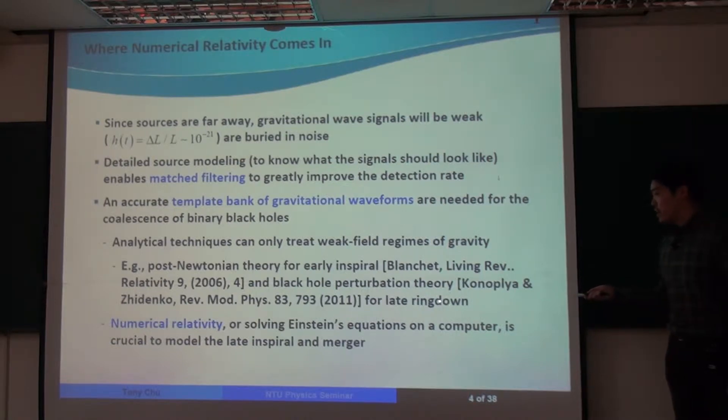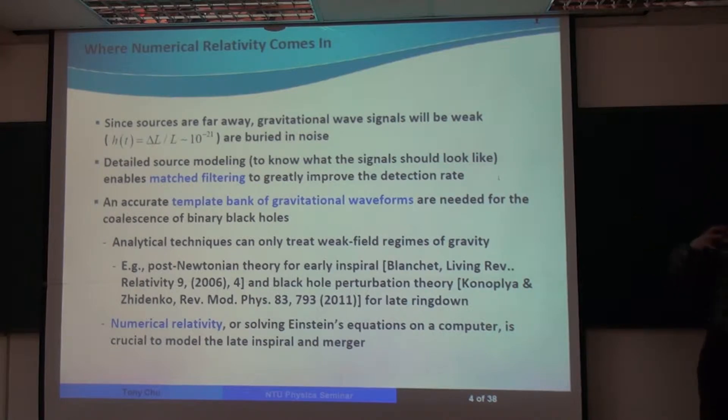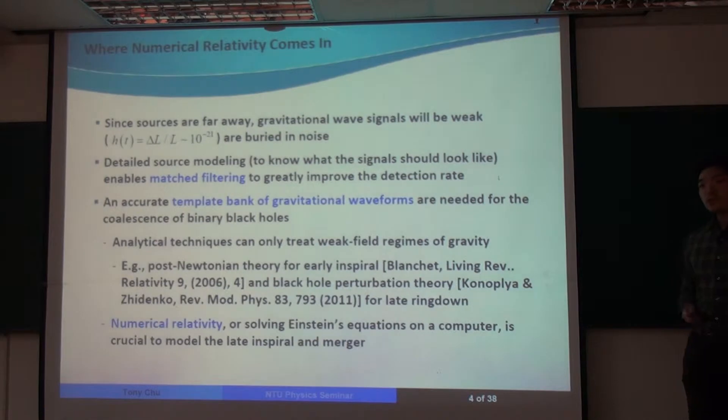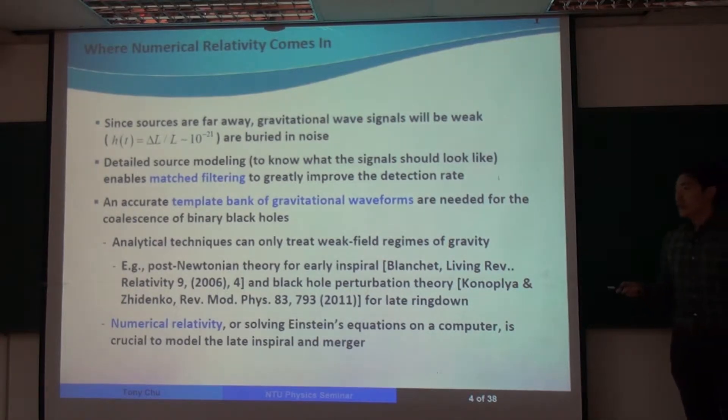And there's black hole perturbation theory that can treat the late ring down. So after these two black holes have already collided, merged together to form a single black hole, and at very late times, it'll settle down to some equilibrium geometry. At those late times, the problem can basically be treated as just a curved black hole that's weakly perturbed. So black hole perturbation theory is valid there. But in the intermediate stages, that is in the late spiral and right at the merger of the two black holes, analytical techniques break down.